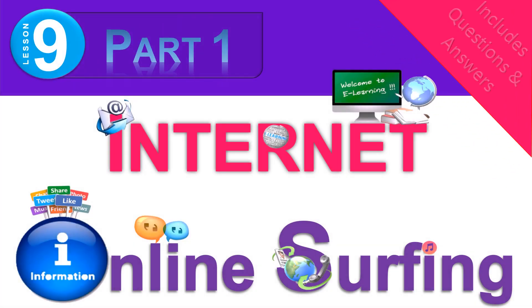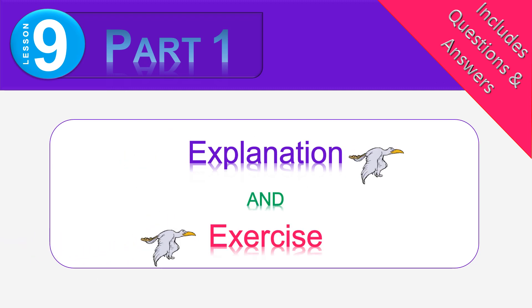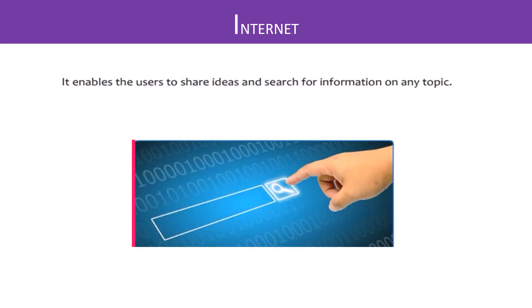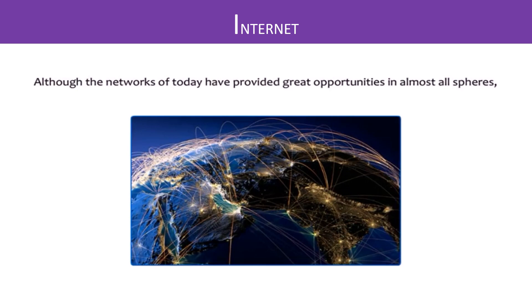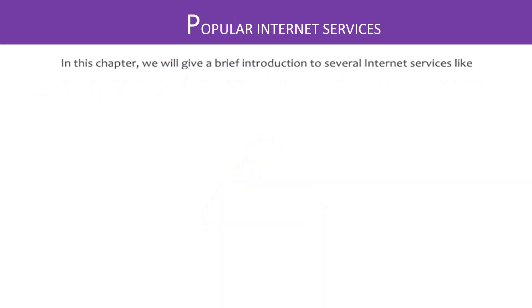Lesson number nine, part one. This session includes explanation and then exercise at the end. The internet is defined as a network of millions of computers connected to each other worldwide through telephone lines or cables. It allows users to share ideas and search for information on virtually any topic. Although networks of today have provided great opportunities in almost all spheres, there are various types of challenges and threats associated with them, about which we need to remain cautious at all times.